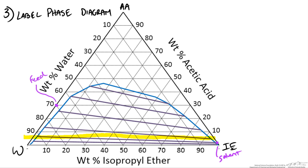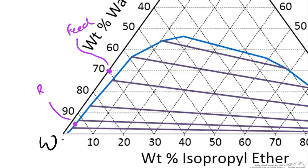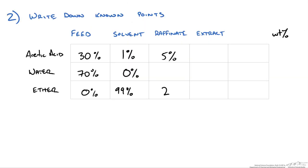We also know that coming out of the last stage it has to be at equilibrium, assuming each stage is an equilibrium stage. For 5 weight percent acetic acid we are going to be right on the equilibrium line, and therefore we can determine both the water and isopropyl ether composition at that point. This is our raffinate Rn. It is probably about 2 weight percent isopropyl ether, which means we have 93 percent water to satisfy our 100 percent composition.